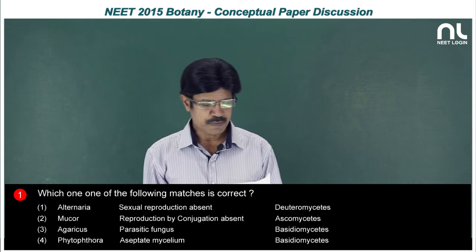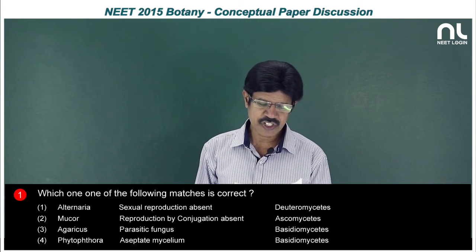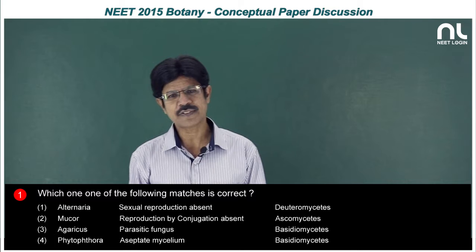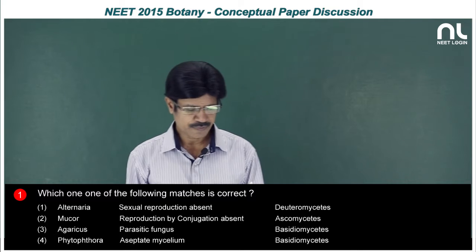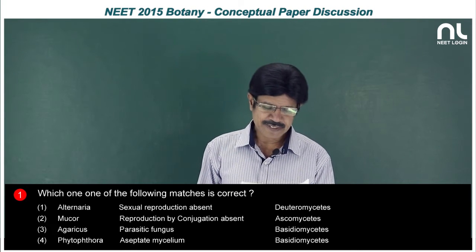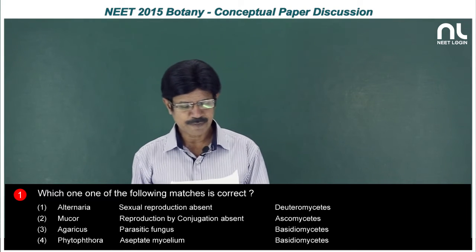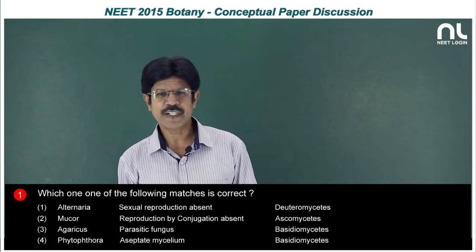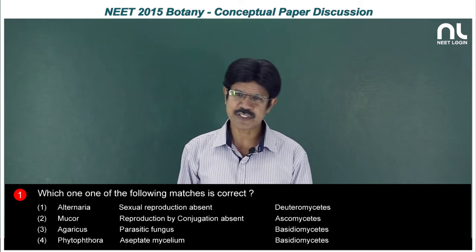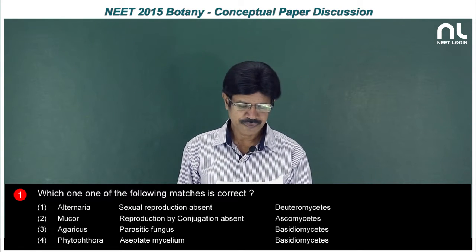The second option — Mucor, reproduction by conjugation, Ascomycetes — is wrong, as Mucor belongs to Phycomycetes. The third option — Agaricus, parasitic fungi, Basidiomycetes — is also wrong, because Agaricus is a saprophytic fungus, not parasitic, though it does belong to Basidiomycetes.